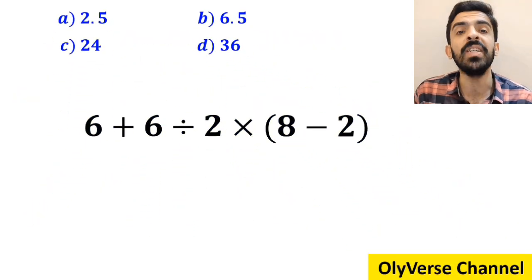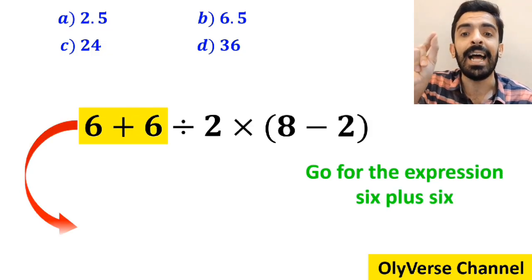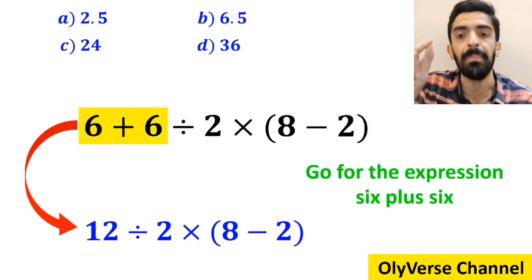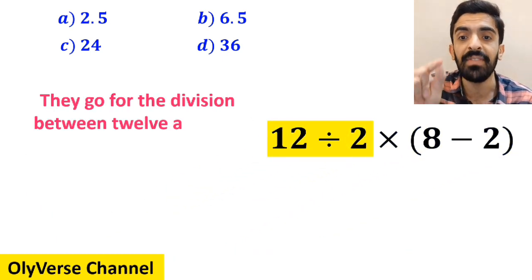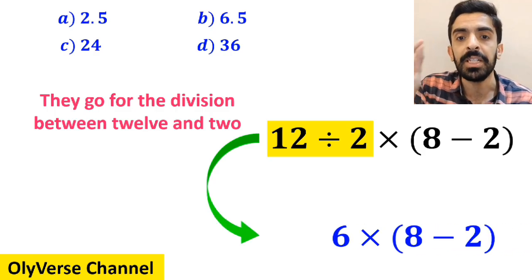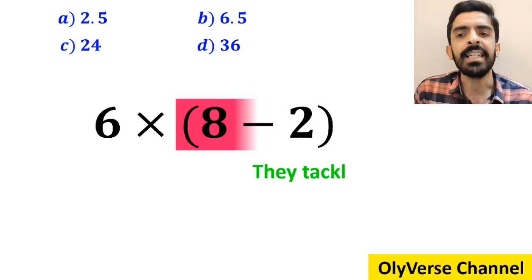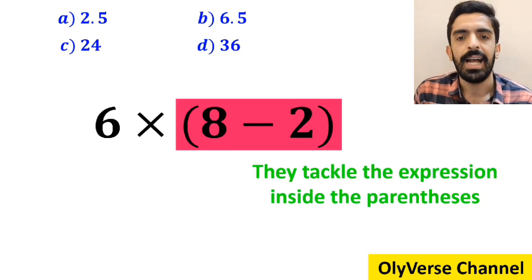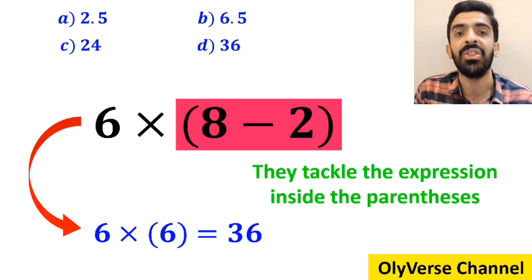Many people, when solving this question, first go for the expression 6 plus 6, and rewrite this expression as 12 divided by 2, then times 8 minus 2 in parenthesis. In the next step, they go for the division between 12 and 2, and this expression simplifies to 6 multiplied by 8 minus 2 in parenthesis. In the final step, they tackle the expression in parenthesis, and rewrite it as 6 times 6, which ultimately gives them the answer 36.